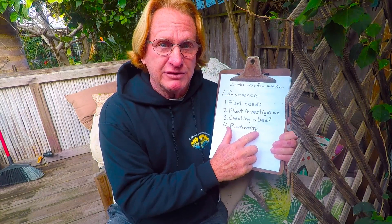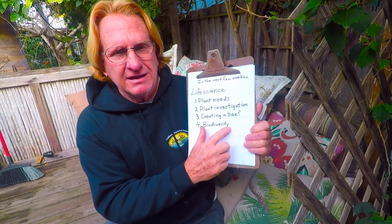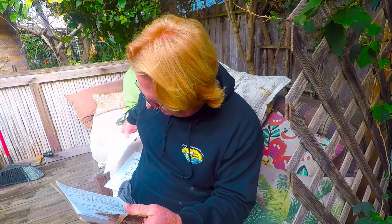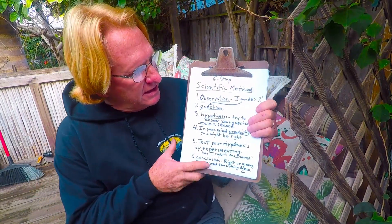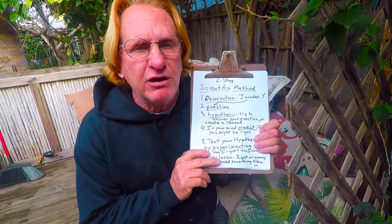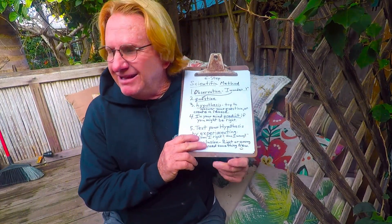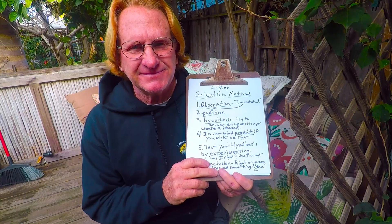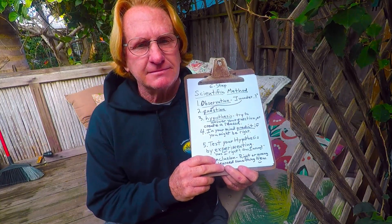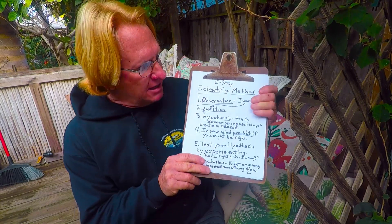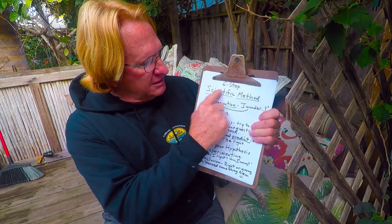And then we're going to talk about biodiversity, which is something very, very important in today's modern world because there are a lot of things happening that are creating less biodiversity, and we've got to stop that. Now, I live in OB, so sometimes we have to do the OB pause when a jet goes over — just part of living in OB. All right, so the scientific method.